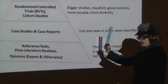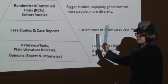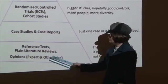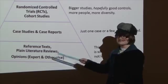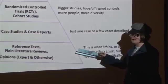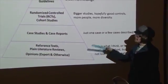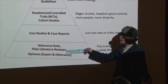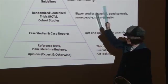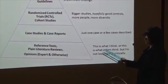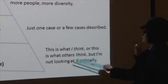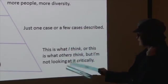At the bottom are your clinical reference texts, which are already out of date the second that they are published because it takes a while to write those. Plain old literature reviews, opinions — expert or otherwise — notice that they are at the widest part down here. That means there are a lot more of them, and they can be a base to your house much like your textbook, but they are not at the heights of the evidence-based practice pyramid. At this level, it is more 'this is what I think' or 'this is what others think,' but not looking at it too critically.